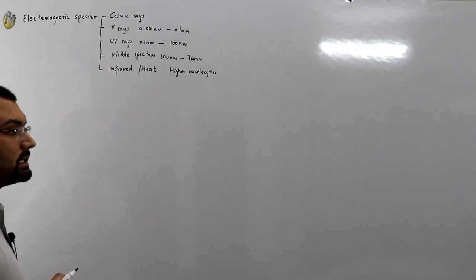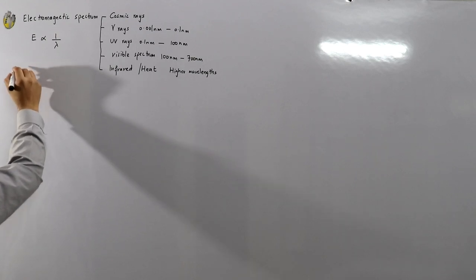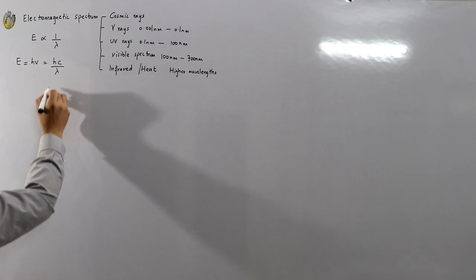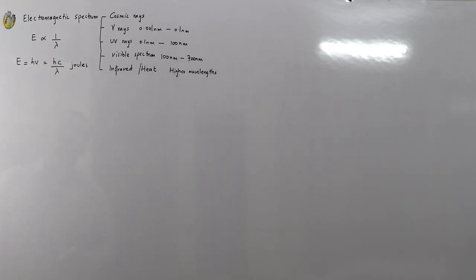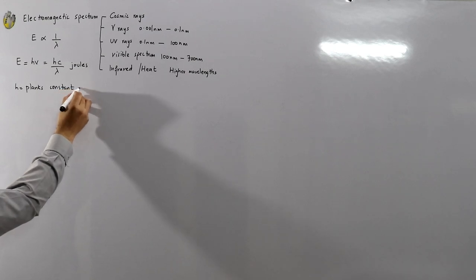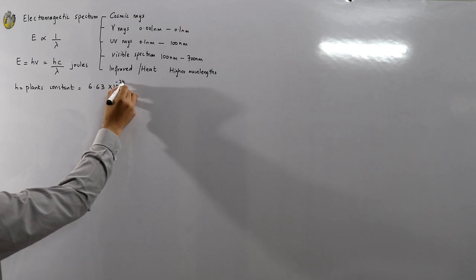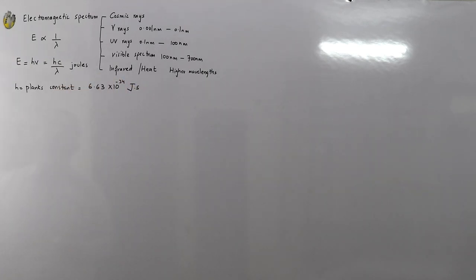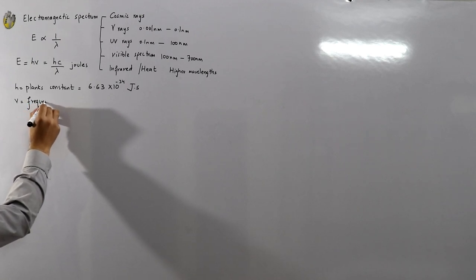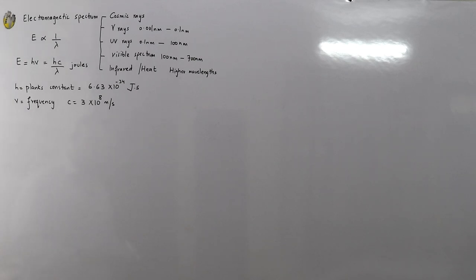The higher the wavelength, the lower the energy. The energy of the photon is inversely proportional to its wavelength. The formula is E = hν = hc/λ, which gives energy in joules. Here h is Planck's constant with value 6.63 × 10⁻³⁴ joule·seconds, ν is the frequency, c is the speed of light at 3 × 10⁸ m/s, and λ is the wavelength of the associated light.